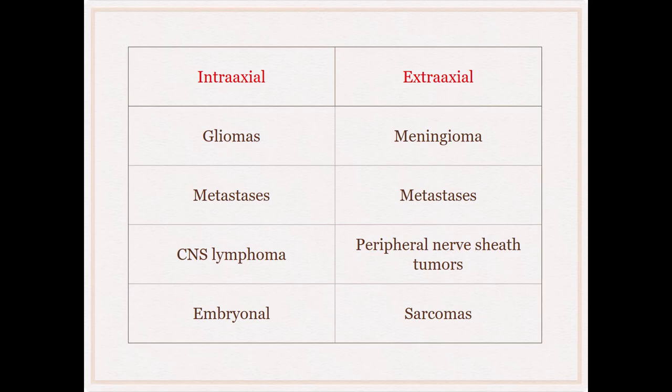The differential diagnosis varies between intra-axial and extra-axial. Intra-axial differentials include gliomas, metastases (carcinomas and melanomas), CNS lymphoma, and embryonal tumors. Extra-axial tumors are by and large meningiomas since they're dural-based, but you can also get metastatic tumors, peripheral nerve sheath tumors like schwannomas, and sarcomas that are generally extra-axial.